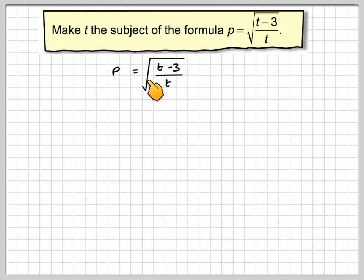Okay, here we've got a square root sign, so that's what makes it difficult. So to remove that, what you need to do is square both sides.